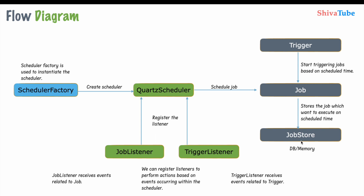The job data stored in the database is used at the scheduled time. The trigger automatically picks that data from the database and starts executing those tasks. For example, if the time is 11:50 and I have scheduled a job to run at 12:00 AM, after 10 minutes the trigger will pick the data from the database and begin execution.